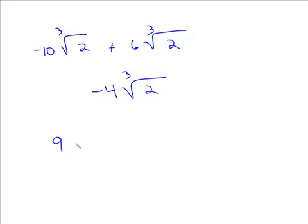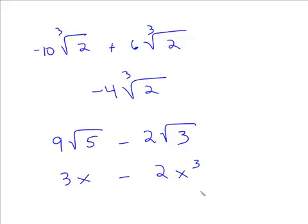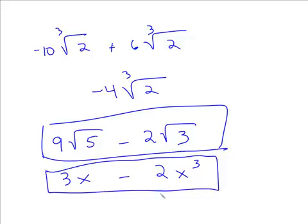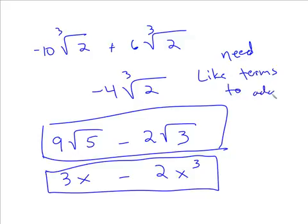Let's say you have 9 square root 5 minus 2 square root 3 — there's nothing you can do here because these are not like radicals. It's like 3x minus 2x cubed — not like terms, so you can't combine them. This is your answer as is. You only need like terms to add or subtract.